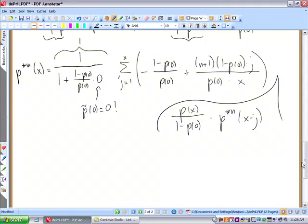Let's examine this. First you have a one over p of zero that you can pull out of the sum.